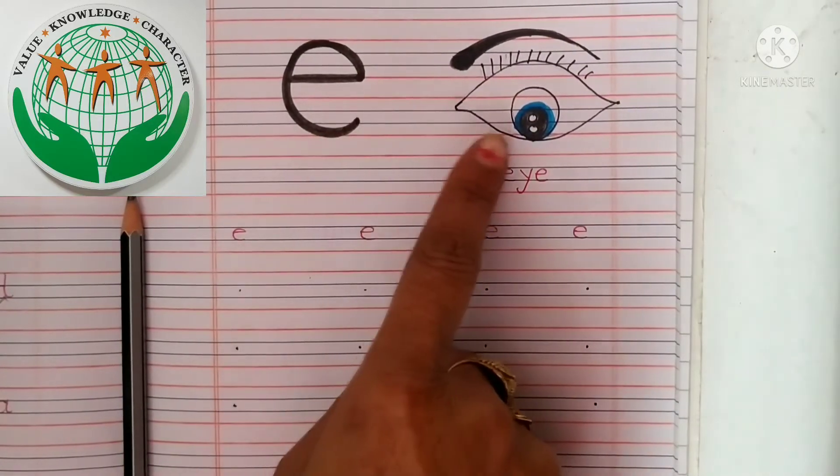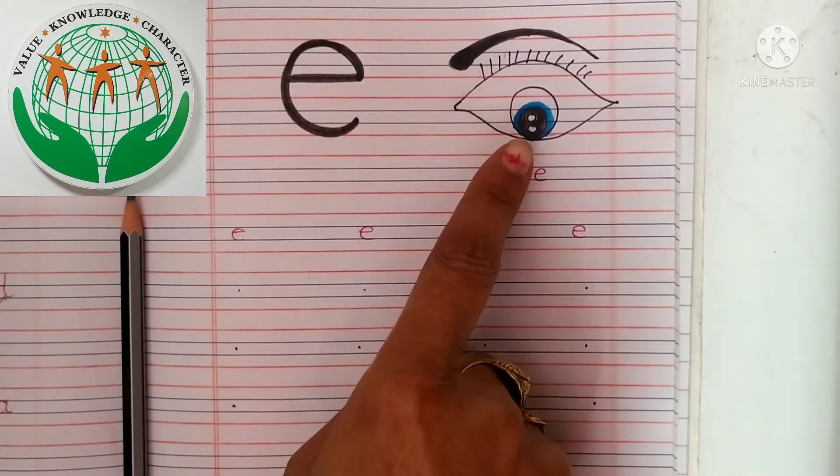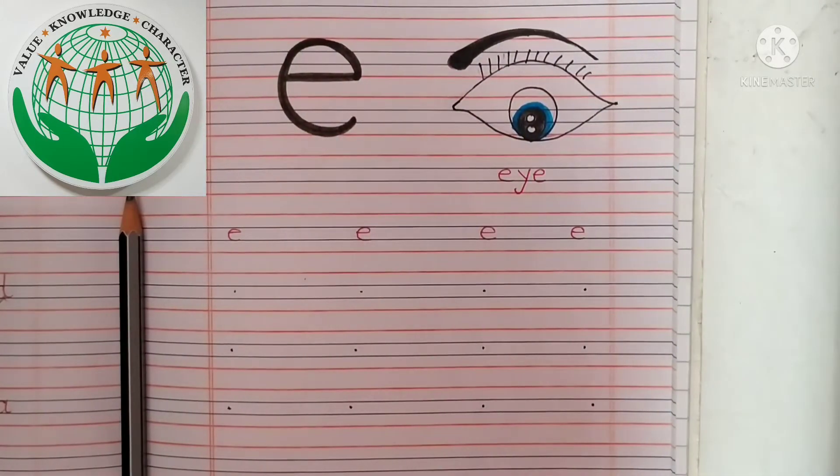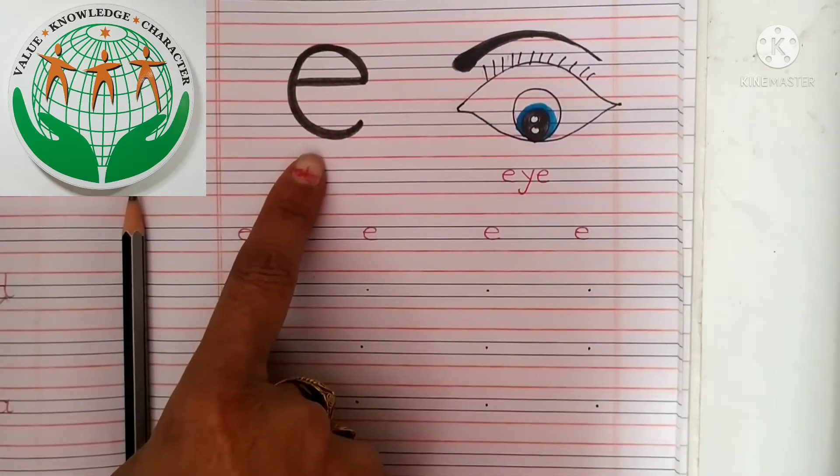E for eye, e for eye. So kids, now we will write small e, baby e.